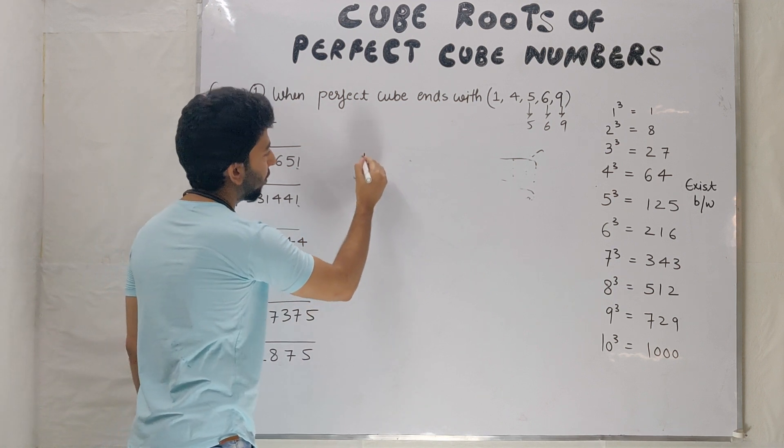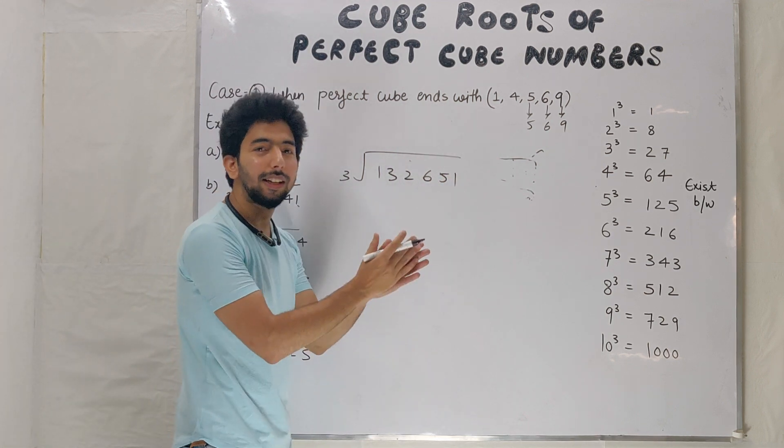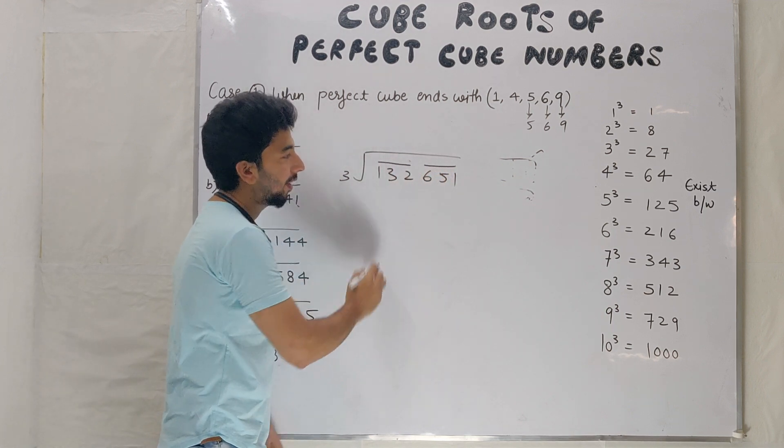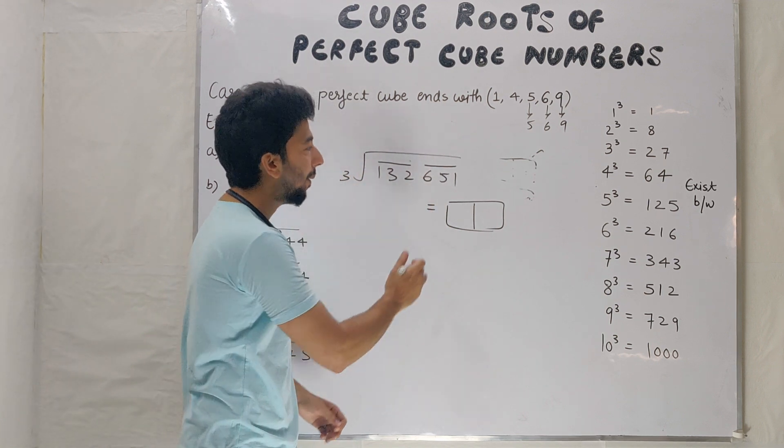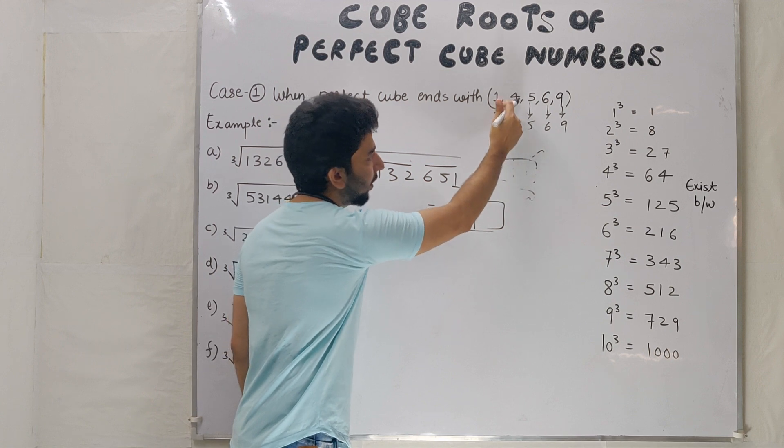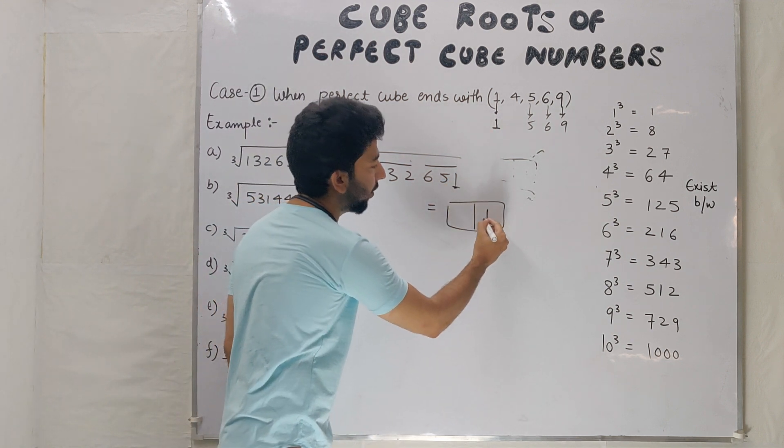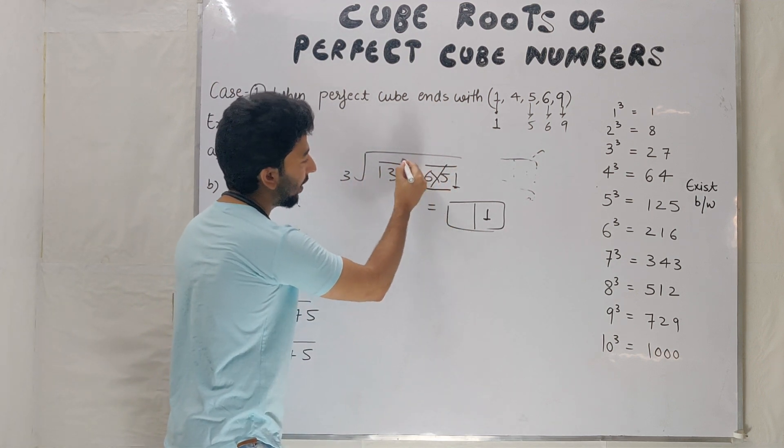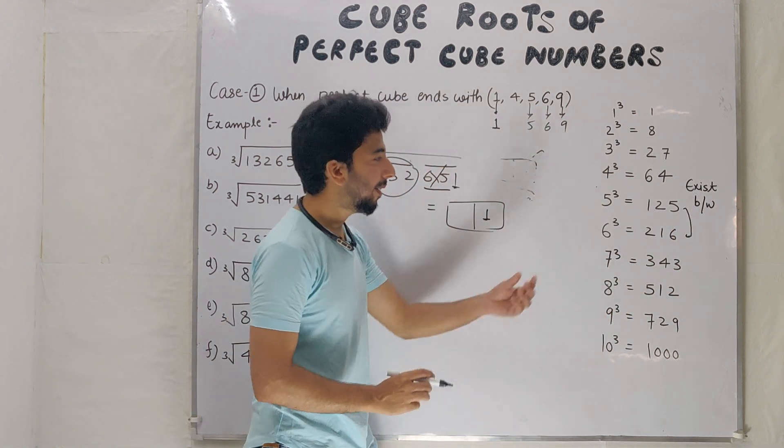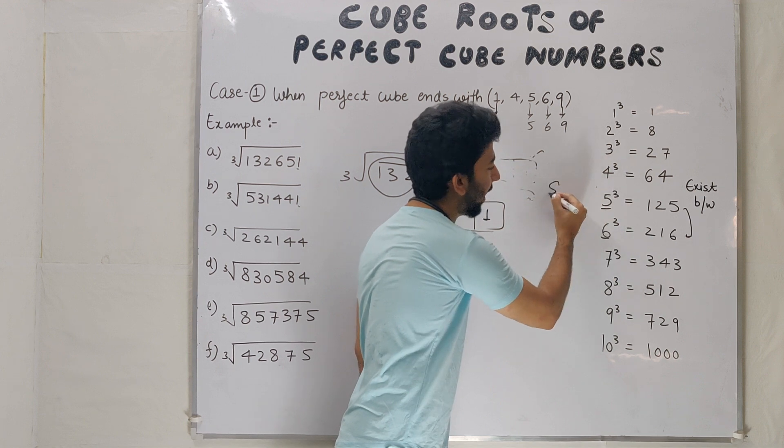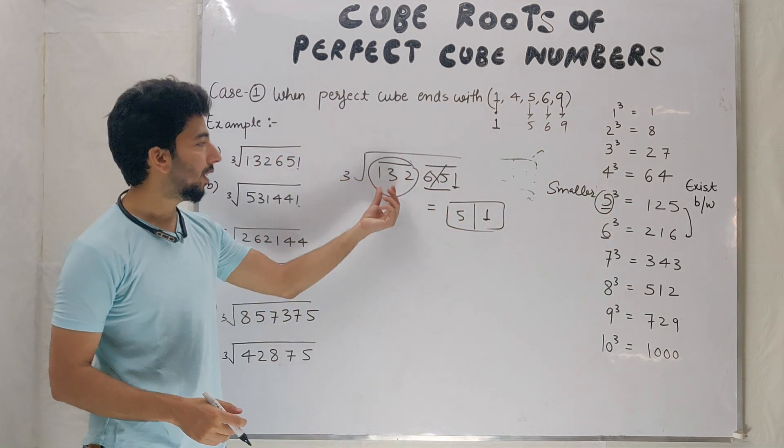Example number 1. Cube root of 132651. So first your job is to pair up 3 digits, 3 digits. Cancel out the last three digits. Now we check where 132 lies - between 125 and 216. These are cubes of 5 and 6, so smaller one is 5. And since the number ends with 1, unit place is 1. So 51 is the cube root of 132651.